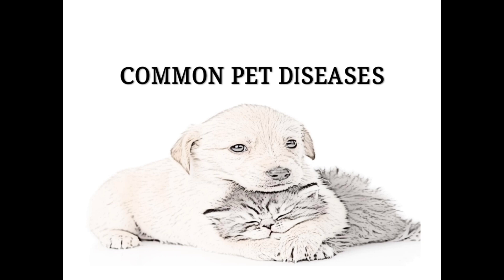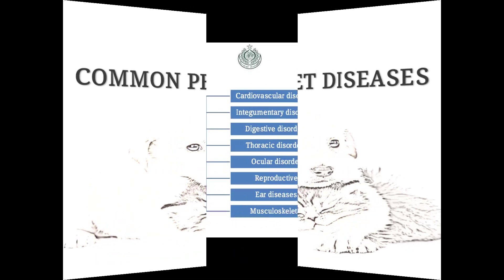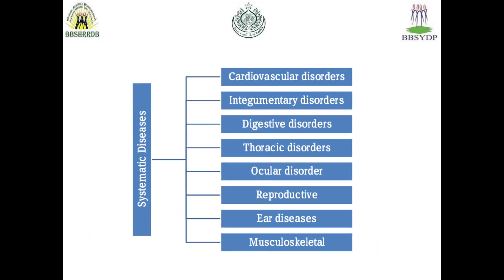Most of the systems affected by infectious or non-infectious agents include cardiovascular disorders, integumentary or skin disorders, digestive disorders, ocular or eye diseases, reproductive disorders, ear disorders, and musculoskeletal disorders. Let's start our today's lecture.